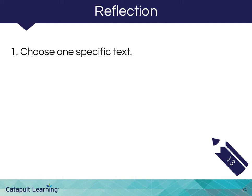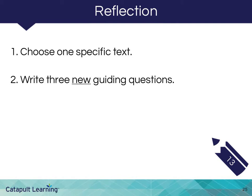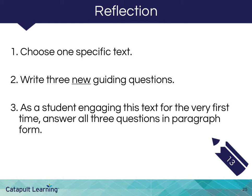Either by yourself or in a group, let's take some time to reflect on the classroom application of peer editing strategies in your content area. Choose one specific text — this may be one of your texts from our previous reflection. Write three new guiding questions for your specific text. Here are some guiding questions we suggested earlier: What is my reaction to this paper? What is the writer trying to tell me? What does he or she most want me to learn? Imagine that you're one of your students engaging this text for the very first time. As a student, answer all three guiding questions in paragraph form. Please pause the video, draft your questions, and answer them as if you're reading the text as a student for the very first time. If you're able, share with a colleague and ask them about their text, guiding questions, and answers. Then ask: How does this text connect to your unit's themes, assignments, and assessments? In other words, how does this specific text help you teach your unit? Press play when you're ready to resume.